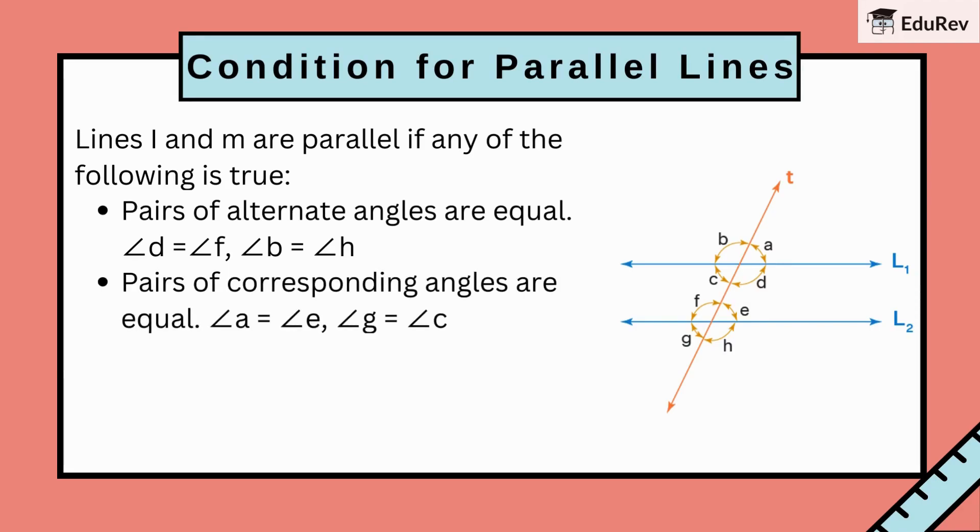Pairs of corresponding angles are equal. That is, angle A is equal to angle E, angle G is equal to angle C.